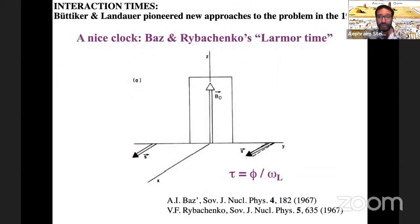So one way you could imagine defining that goes back to Baz and Rybachenko in the 1960s, but was really honed and popularized by Butiker in 1982, I think. And it's called the Larmor time. It is very simple. Let the stopwatch, the hand of the clock, be the spin of a particle. So imagine an electron, it's spin polarized along the x direction over here, approaching a barrier. But inside the barrier, confine a magnetic field along the z direction, so that while we're in the barrier, we know that we'll precess at the Larmor frequency.